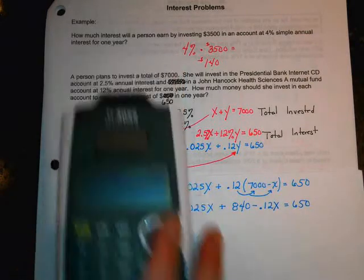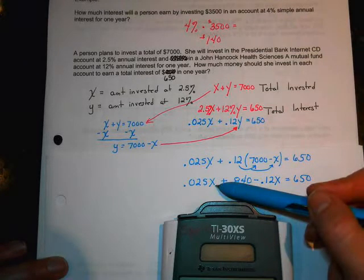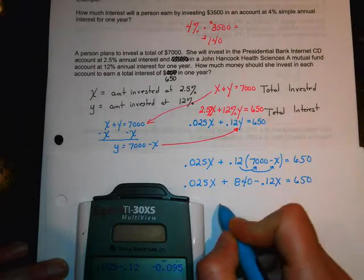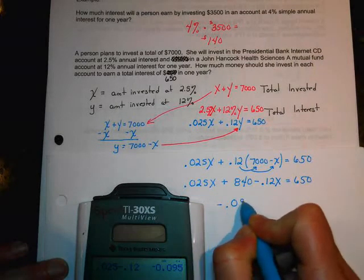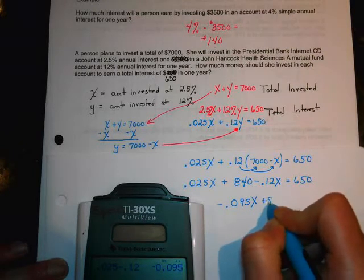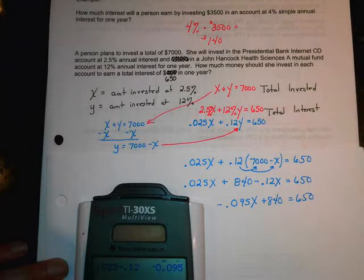Let's go ahead and combine my like terms. 0.025X minus 0.12X. So, that's going to give us negative 0.095X plus 840. And that's going to equal 650. You guys doing okay?